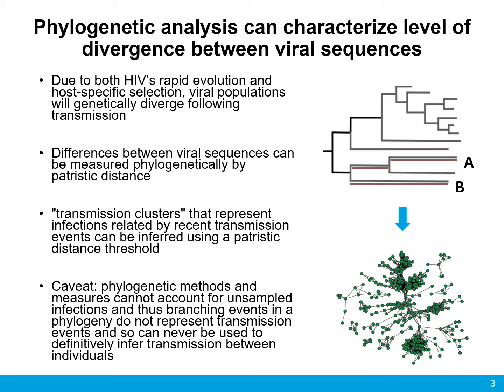One way to identify these kinds of groups is to use phylogenetic analysis to characterize the level of divergence between viral sequences originating from different people. This is possible because viral populations are known to diverge following transmission, a phenomenon that occurs due to both HIV's rapid rate of evolution and also due to host-specific selection. Differences between viral sequences can be measured phylogenetically by patristic distance, which is the path length between two sequences on a phylogenetic tree, shown here as the red lines between A and B. We call infections likely to be related by recent transmission events transmission clusters, and these can be inferred using a patristic distance threshold that groups sequences based on their similarity.